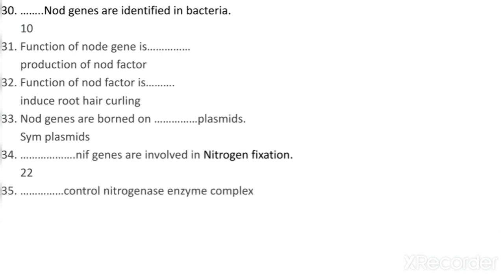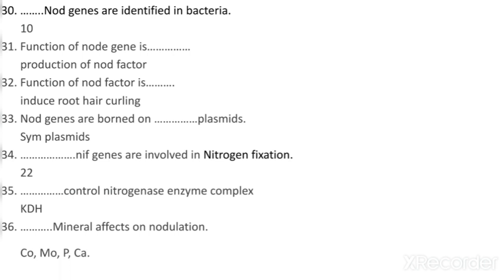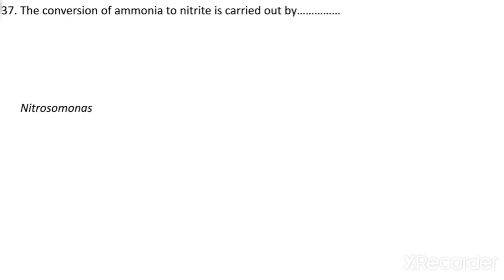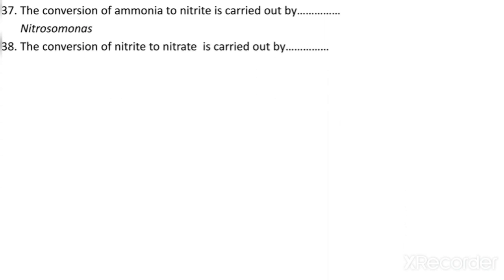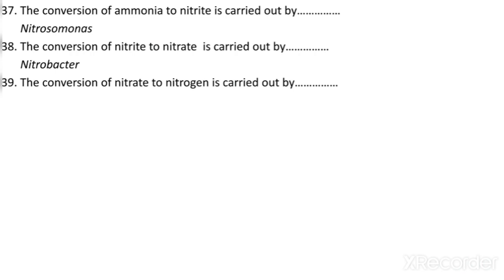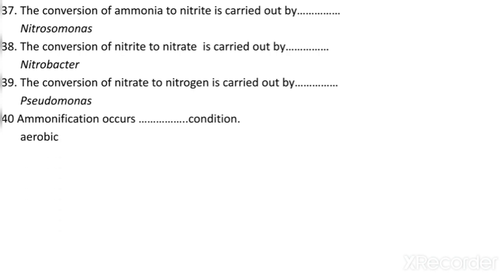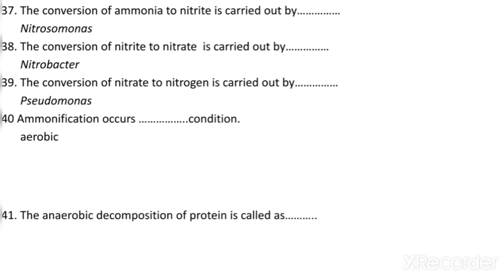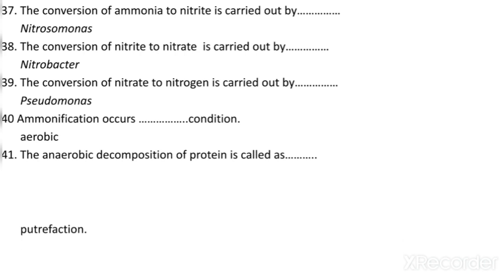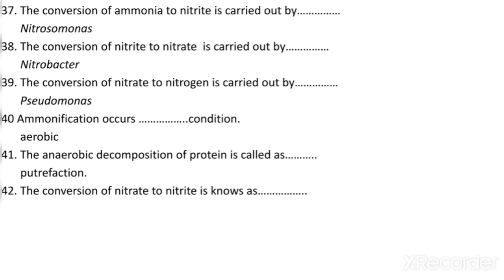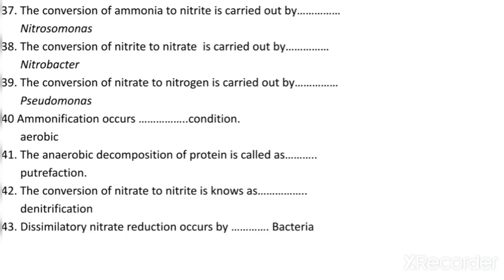Who controls the nitrogenase enzyme complex? NIFKDEH controls the nitrogenase enzyme complex. Which minerals affect nodulation? Cobalt, molybdenum, phosphate, and calcium. The conversion of ammonia to nitrite is carried out by which bacteria? It is carried out by Nitrosomonas — this is very important. The conversion of nitrite to nitrate is carried out by Nitrobacter. The conversion of nitrate to nitrogen gas is carried out by Pseudomonas. Ammonification occurs under aerobic conditions — this is also frequently asked in ICAR NET. The anaerobic decomposition of protein is called putrefaction. Dissimilatory nitrate reduction occurs by Thiobacillus denitrificans.